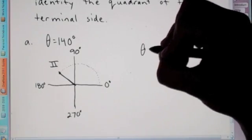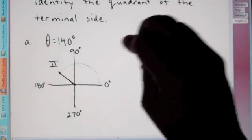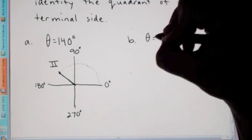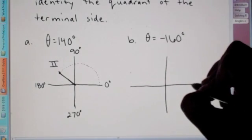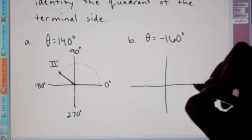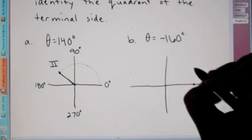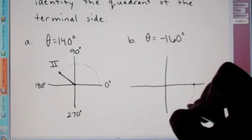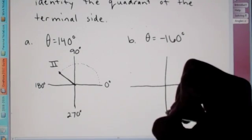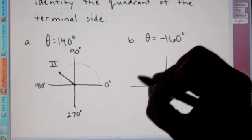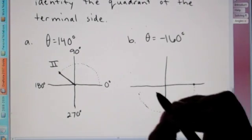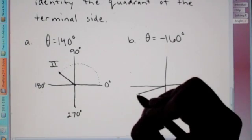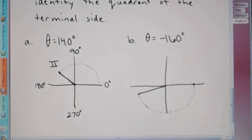Let's do one more. So, theta is equal to negative 160 degrees. So, here goes our initial side. So, since it's negative, we're going to go clockwise. So, this is, we went 90. And 180 would get us all the way across, but it says negative 160. So, it's most of the way, but not quite all the way. Let's say about right there. And this would be our terminal side. And we say this is quadrant three.